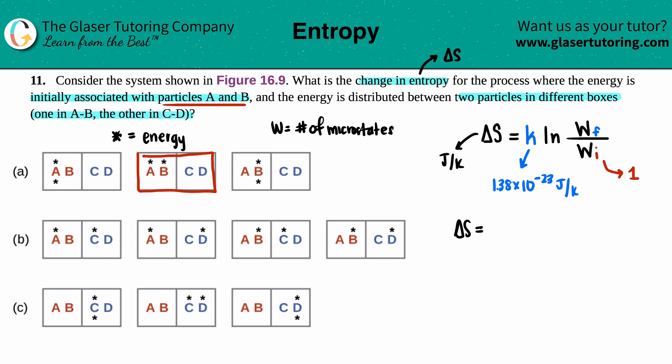If we're already plugging this in, delta S equals the Boltzmann constant, 1.38 times 10 to the negative 23rd, this would be the ln of something divided by one. Now all we have to do is find out what that final microstate is.